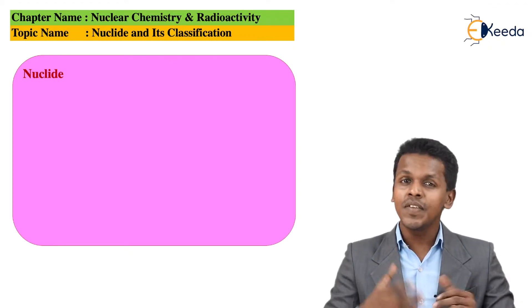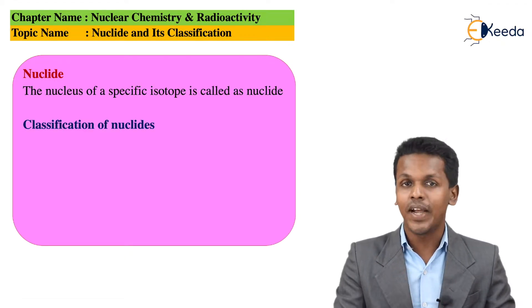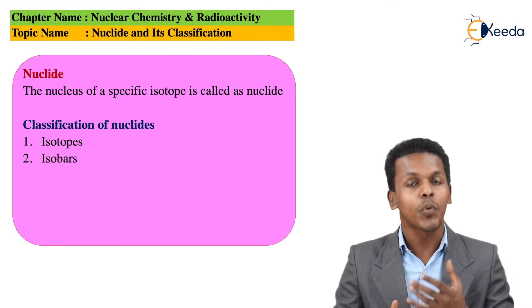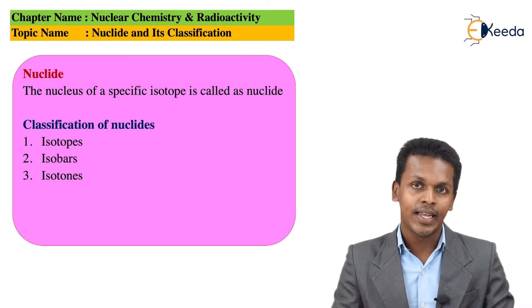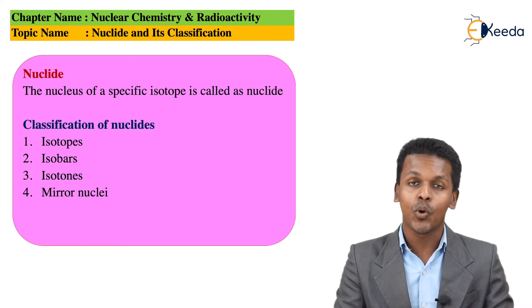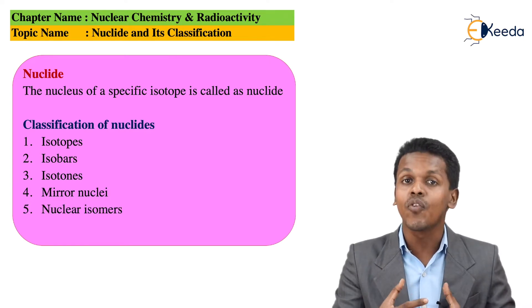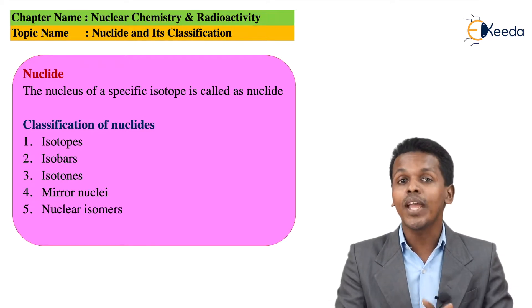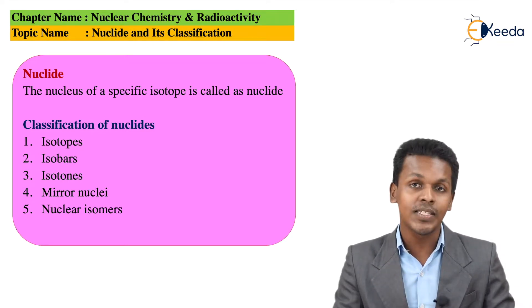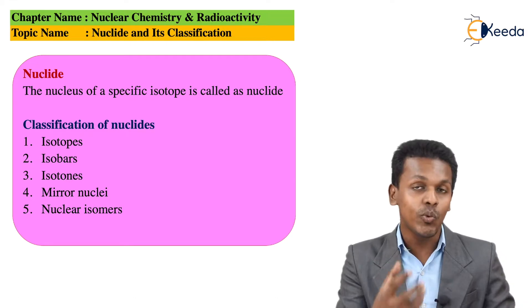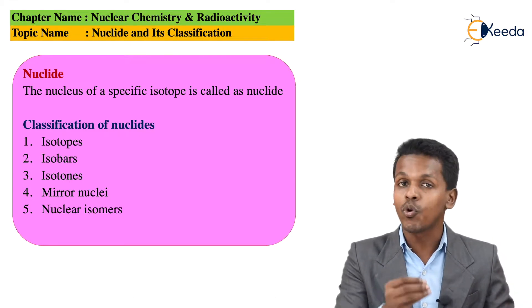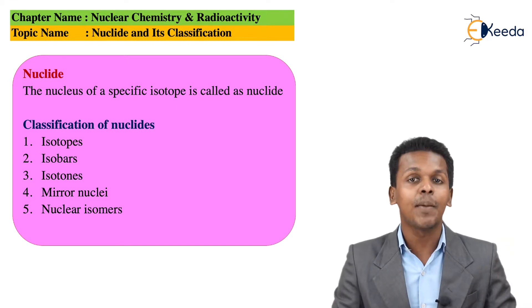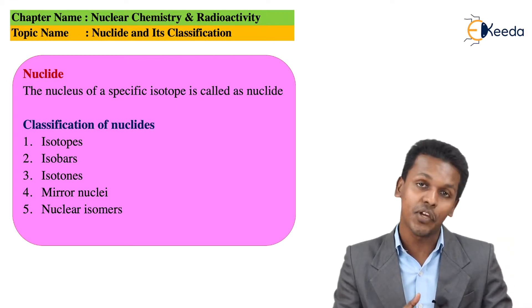As we have discussed in the chapter 'Structure of Atom,' the nucleus is the one which consists of protons as well as neutrons. We have also discussed that there are different types of isotopes of a particular element. Here we are going to talk about the nucleus which consists of protons as well as neutrons, and based on that, we are going to talk about nuclides and their classification.